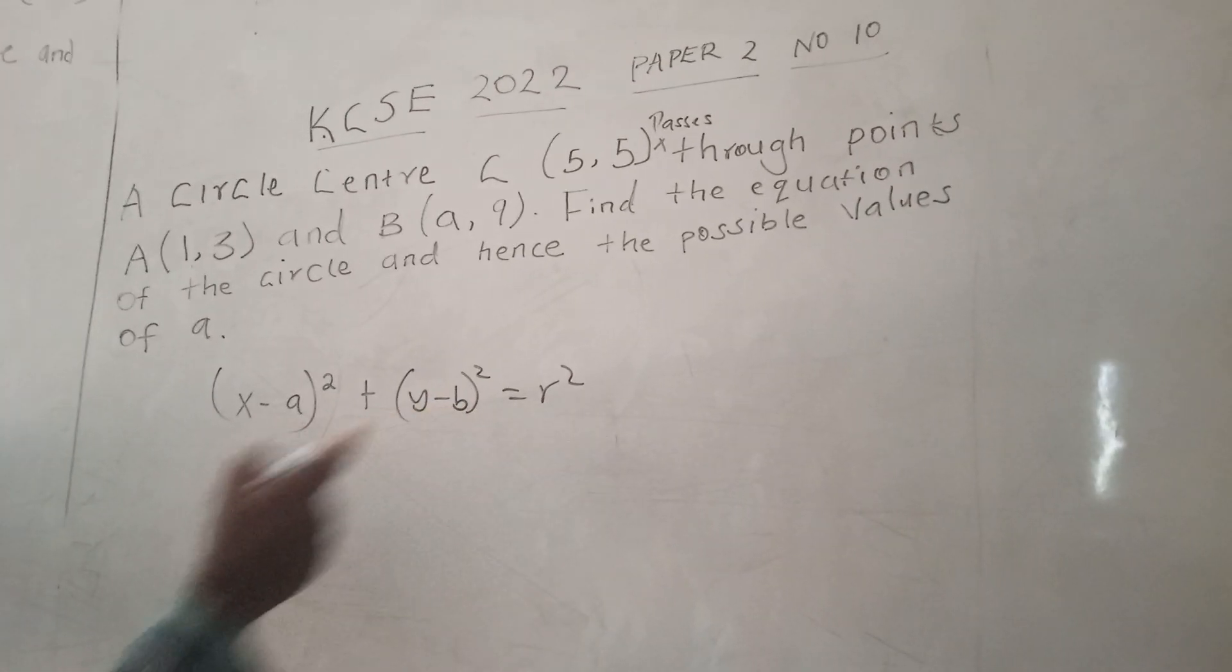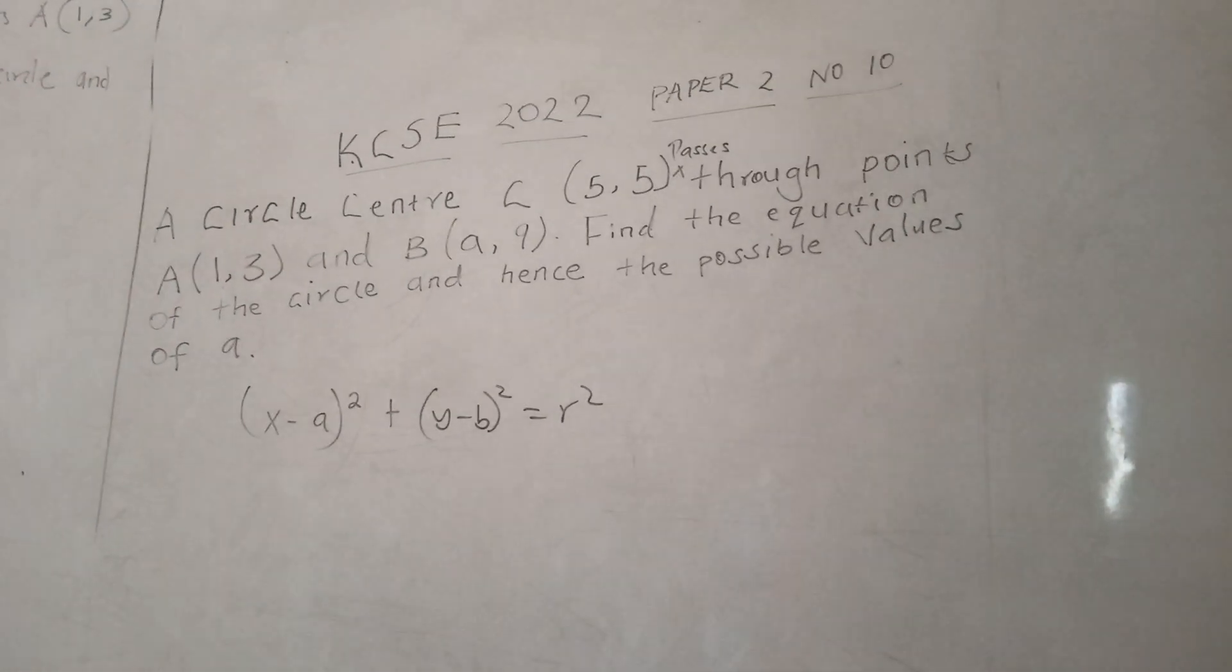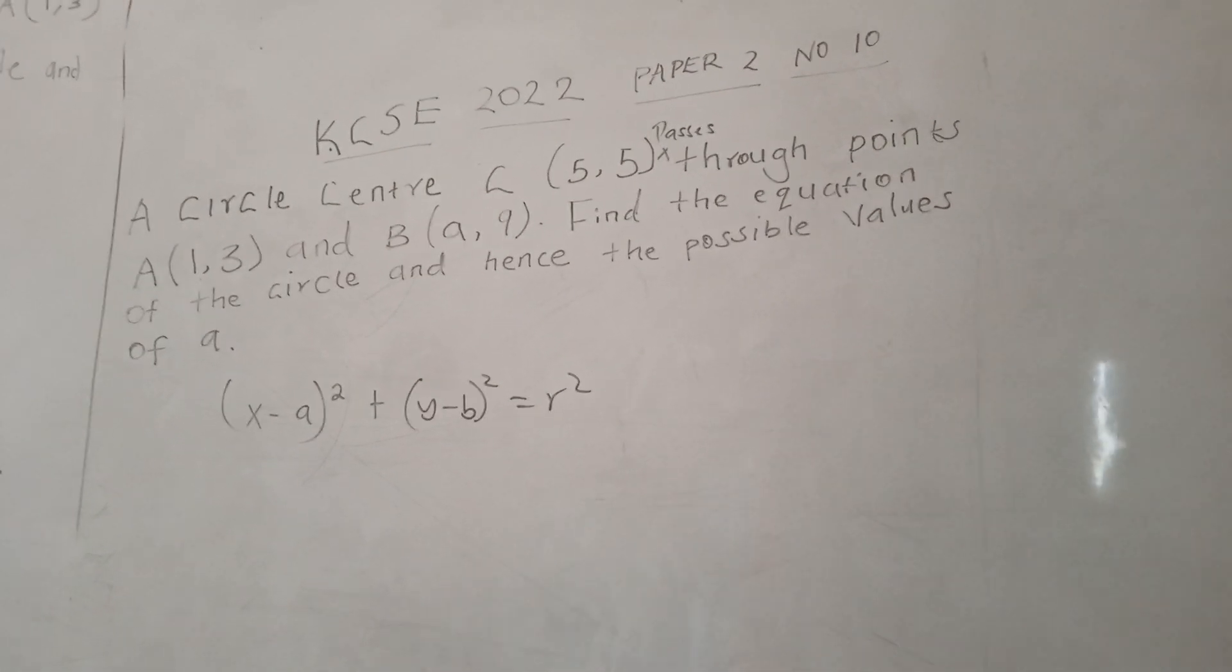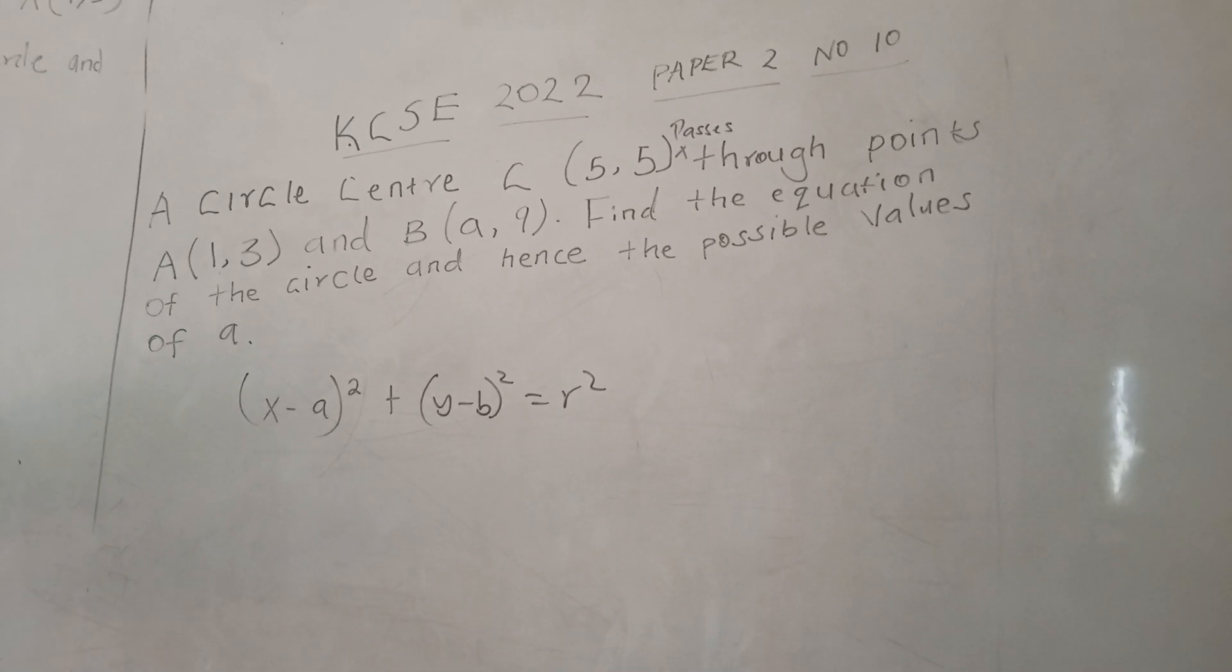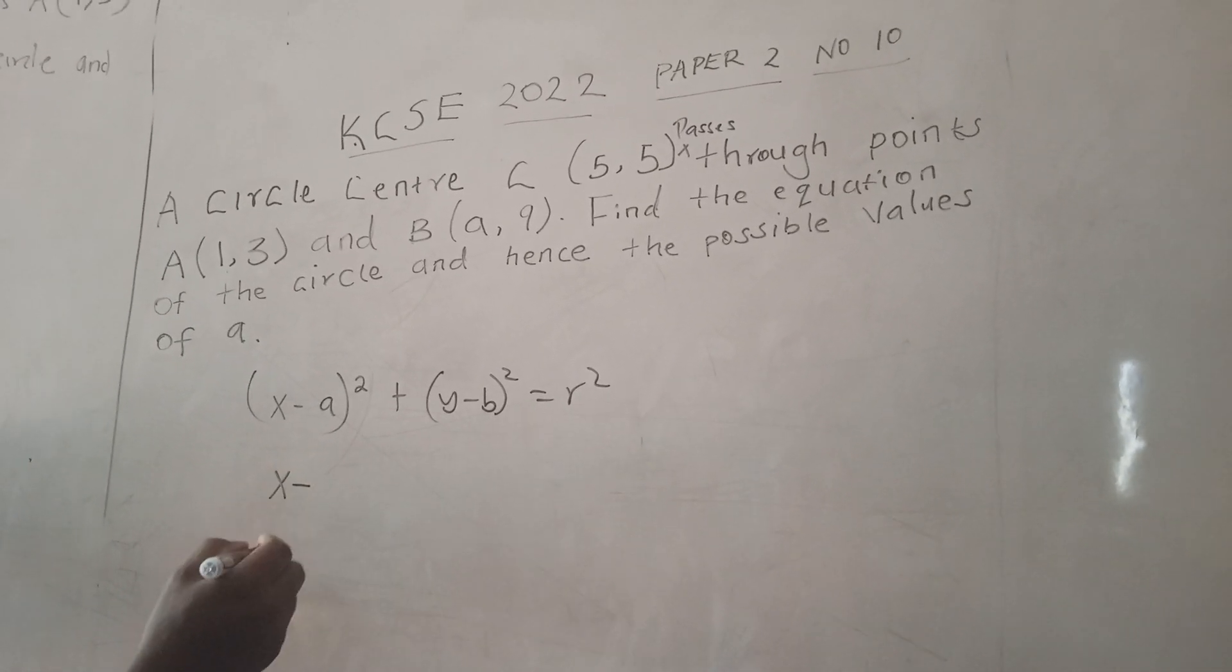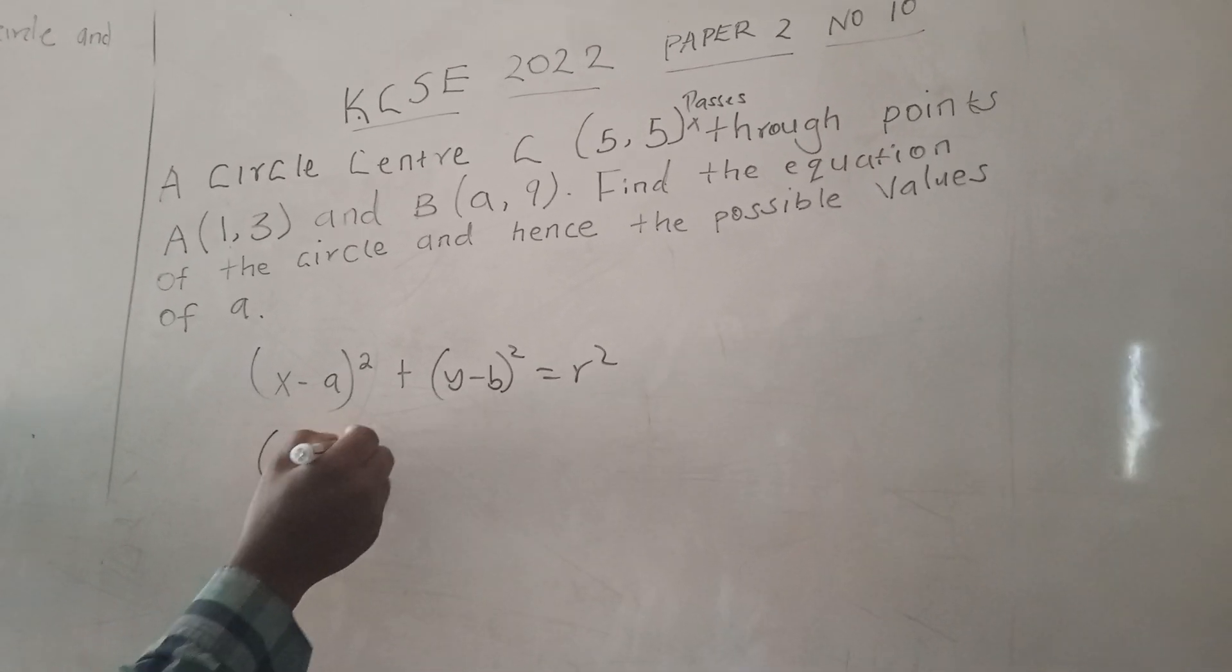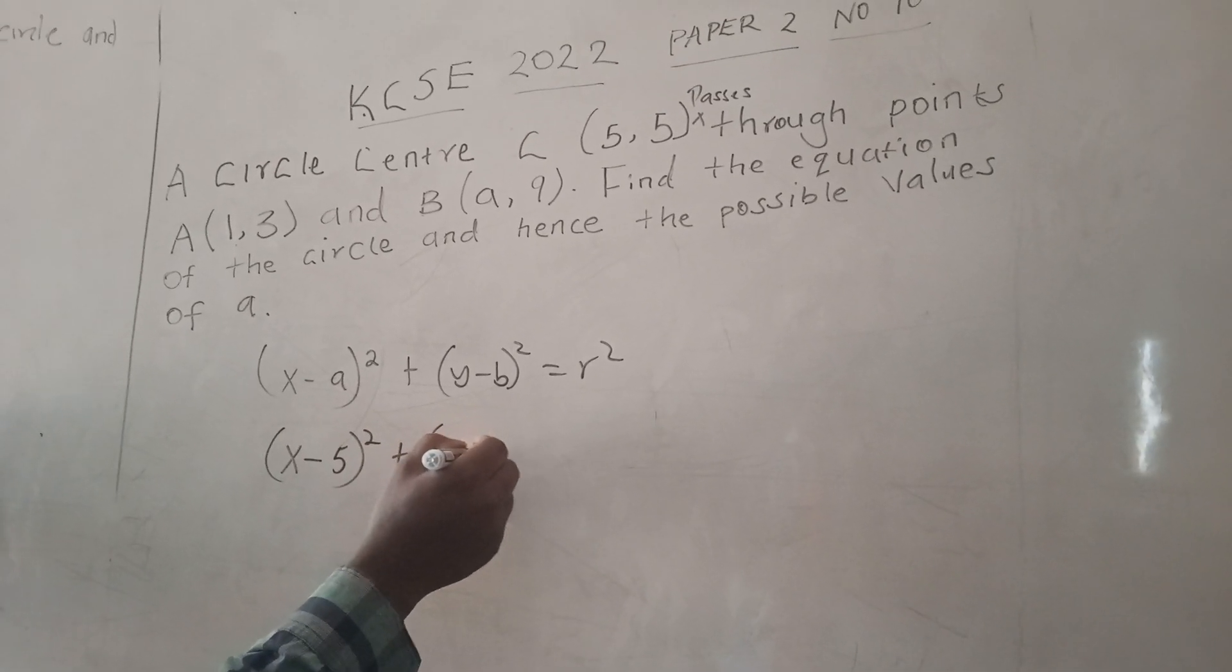Which in this case is (5,5). So the value of a and b are both 5. So (x - 5)² + (y - 5)² = r².